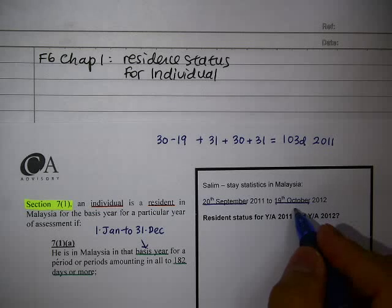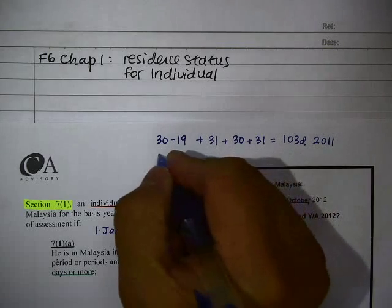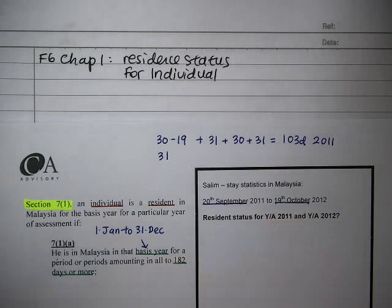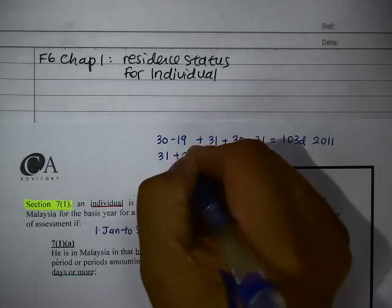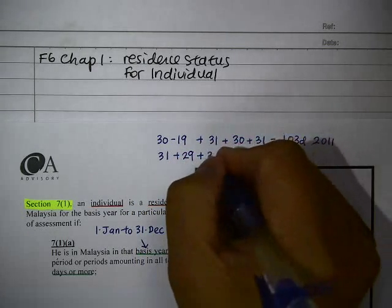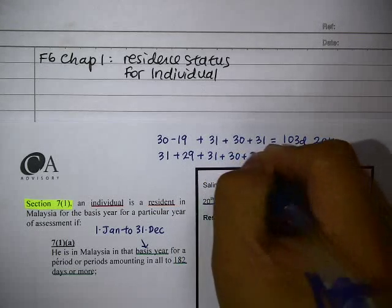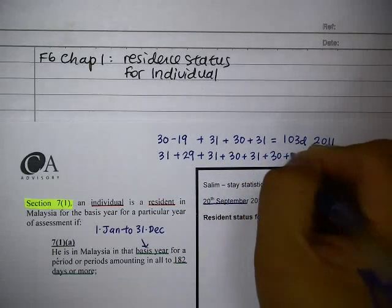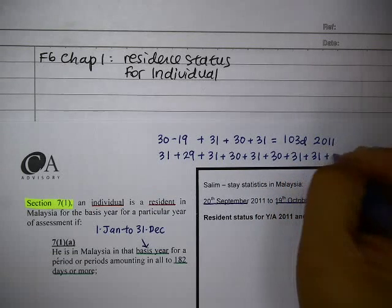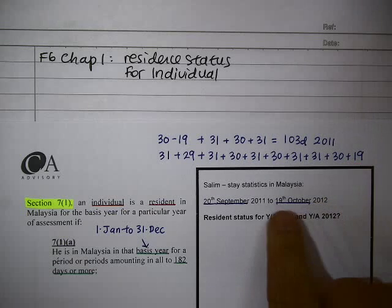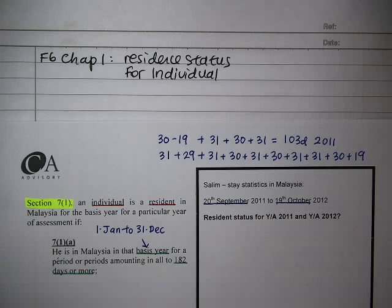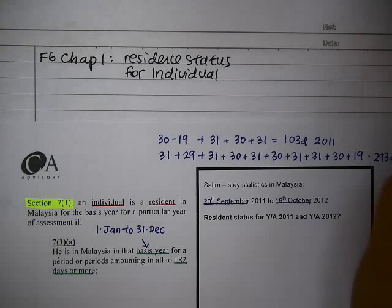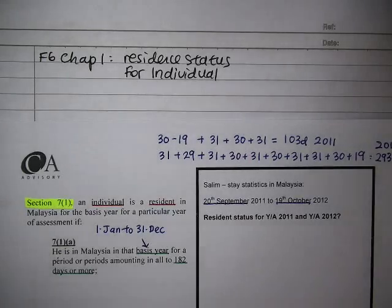For 2012, he is in the country for 31 days in January. Note that 2012 is a leap year, so February has 29 days. Then we add March, April, May, June, July, August, and September up to the 19th. That gives us 293 days for 2012.